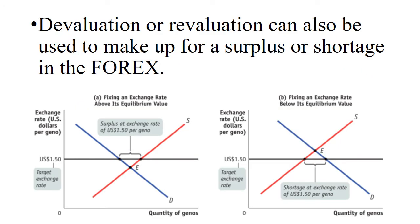Devaluation and revaluation can also fix surpluses or shortages created in the Forex model by a fixed exchange rate. For example, the fixed rate is one Gino equals $1.50 USD. In the first model, equilibrium is below the target rate, creating a surplus — supply is bigger than demand at that price. The government can intervene by decreasing supply of their currency to move equilibrium back to the correct price.